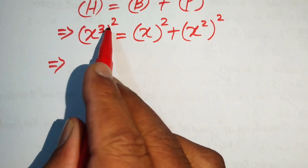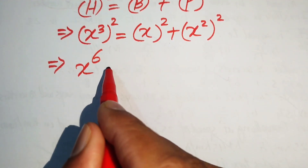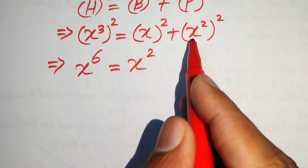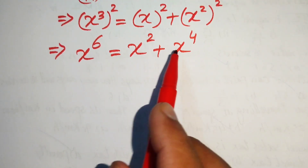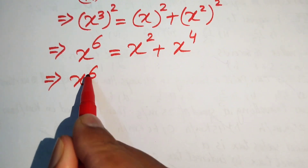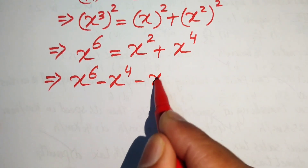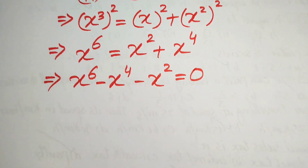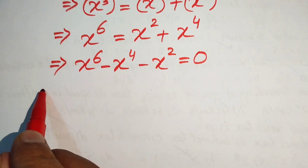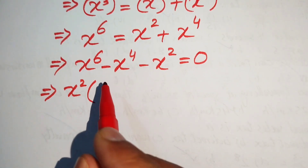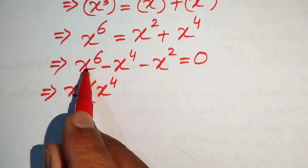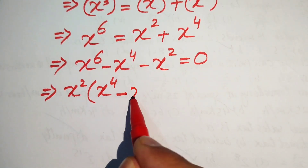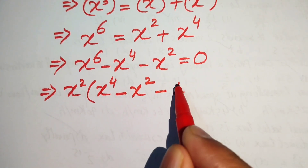After expanding, x cubed squared becomes x to the power of 6, and x squared whole squared becomes x to the power of 4. So we have x to the power of 6 equals x squared plus x to the power of 4. Moving all terms to the left-hand side gives us x⁶ minus x⁴ minus x² equals 0.